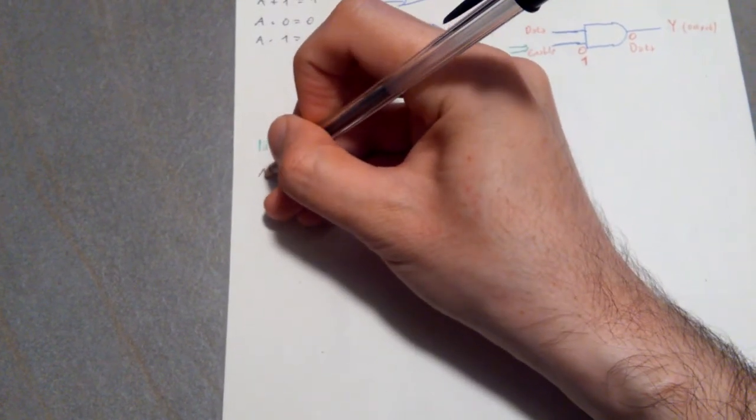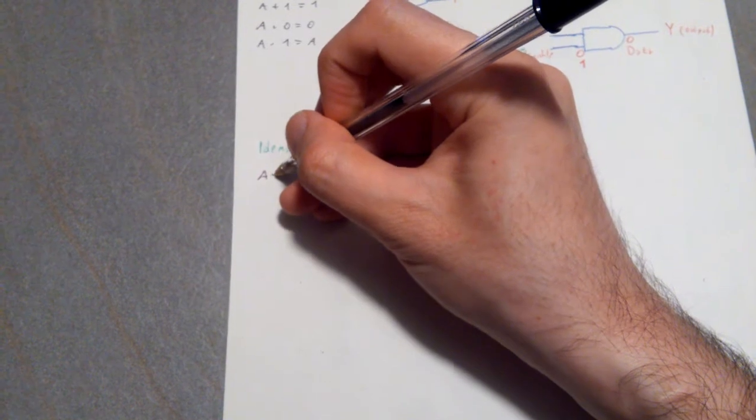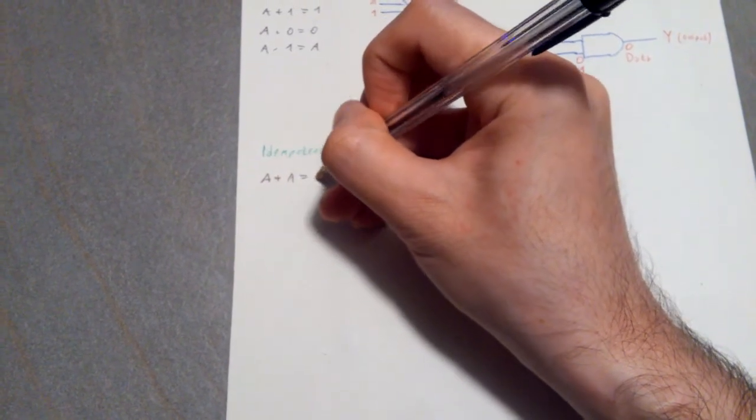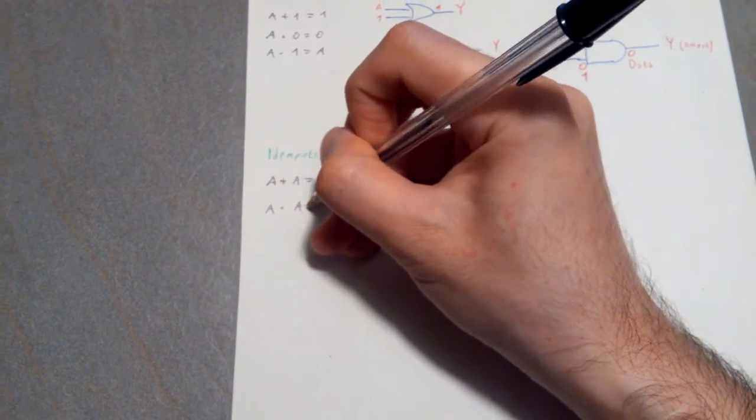So the idempotent rules are actually two and they are A plus A equals A and A times A equals A.